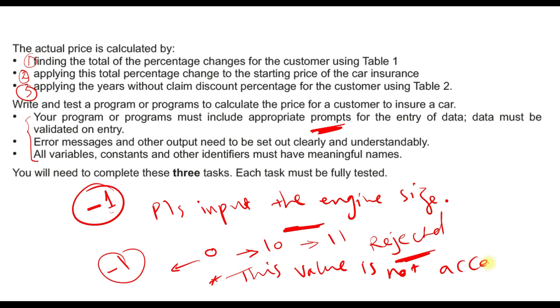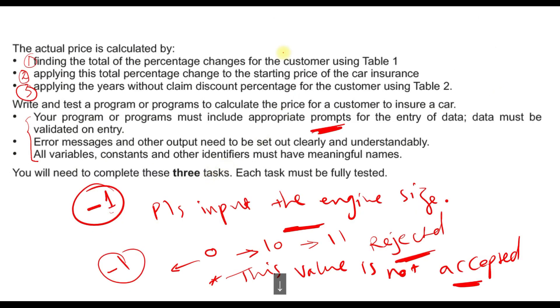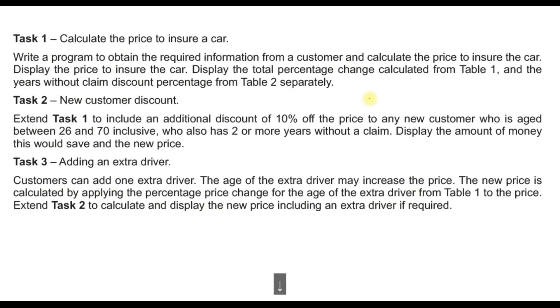All variables, constants, and other identifiers must have meaningful names. Meaningful names means that, for example, if you have a variable to store the engine size, the variable should be like 'EngineSize' - one word without a space. Be careful, one word without a space, and it should be meaningful. For example, you shouldn't name it like 'y' or 'x' or whatever. These are not acceptable variable names and you will be deducted also with a negative one point.